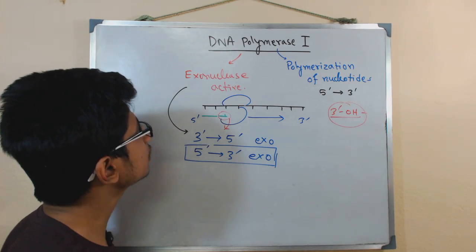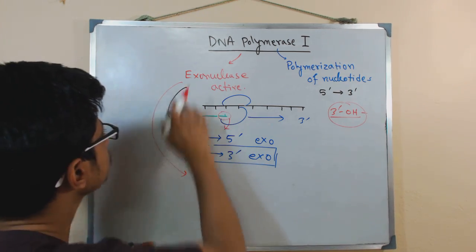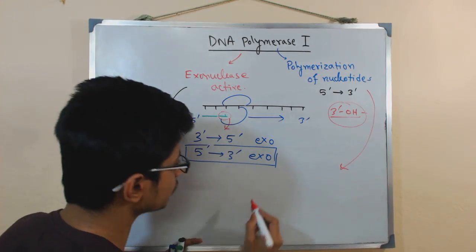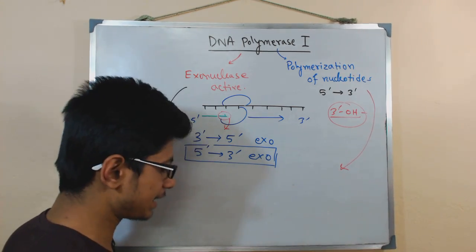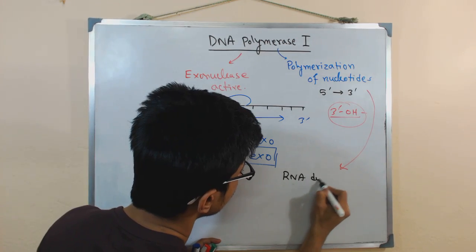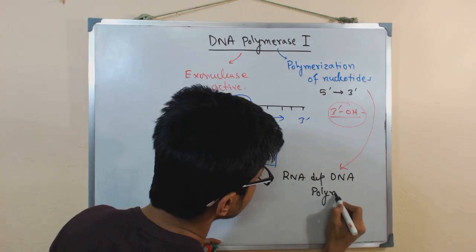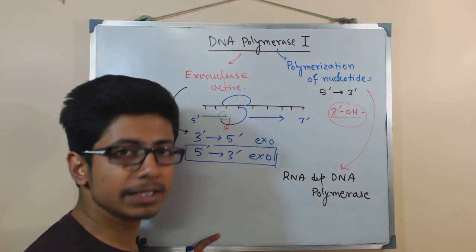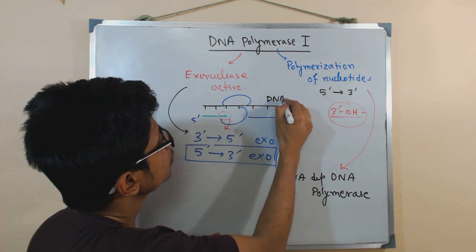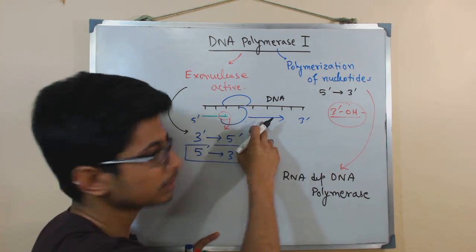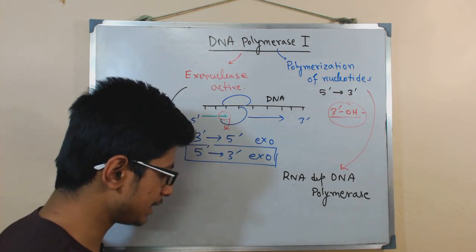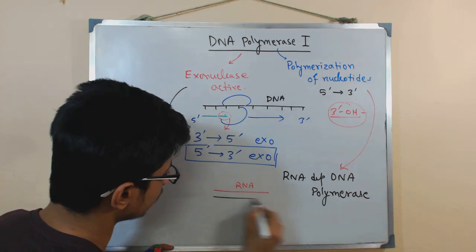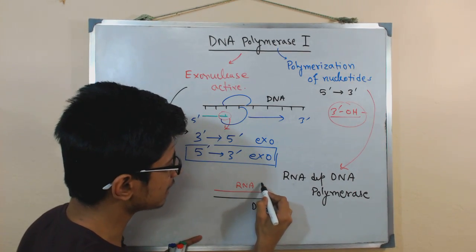Another very important and unique property of DNA Polymerase I is that it can act as an RNA-dependent DNA polymerase. Normally, the polymerization activity of DNA Polymerase I is DNA-dependent DNA polymerization — meaning it requires a DNA template to start synthesizing another DNA strand. But it can also act as an RNA-dependent DNA polymerase, meaning it can use an RNA strand as a template.